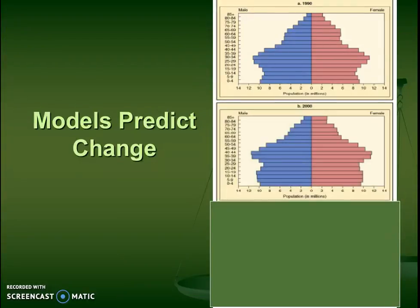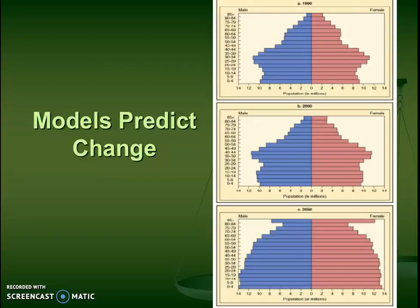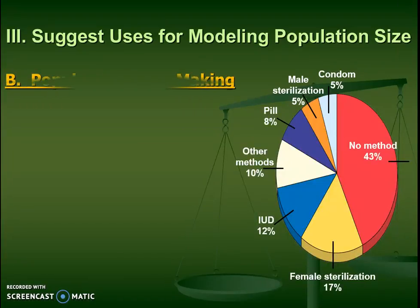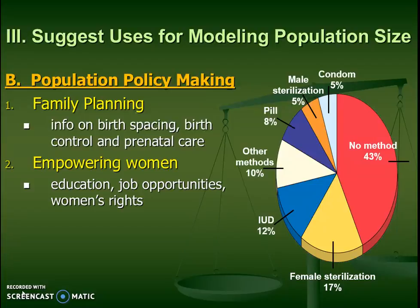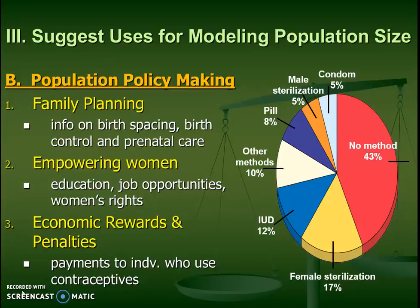These models help us predict change, because over time we could see age-sex pyramids start to change — a wide base can become bigger and bigger as those ages grow up. These tools can also help policy decisions in governments. We'll be investigating different choices different nations make, such as different family planning decisions, different degrees of empowering women through education or the workforce, and different economic rewards or tax breaks for whether or not people are having kids. Those decisions are going to affect policy and influence population size.